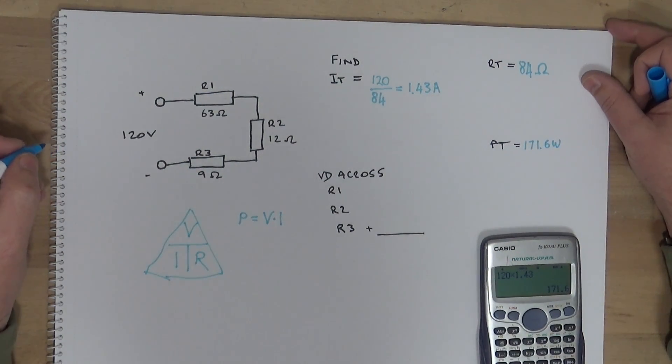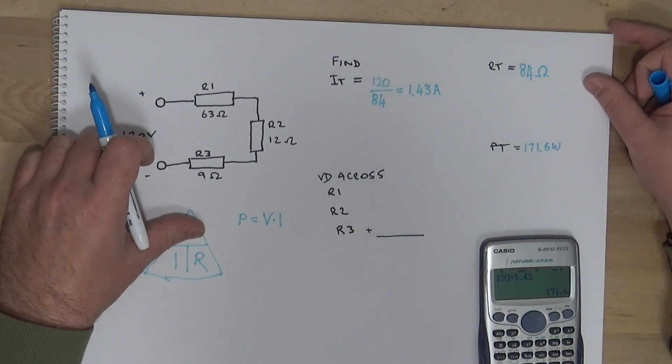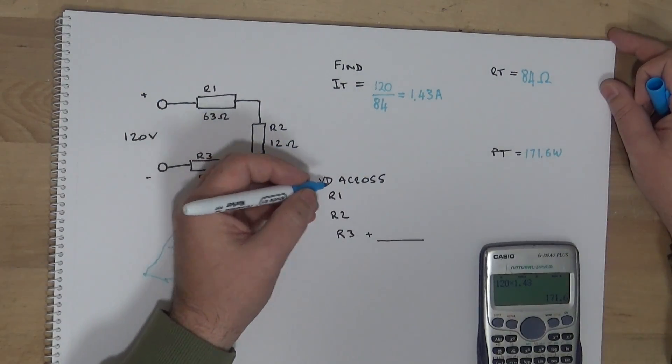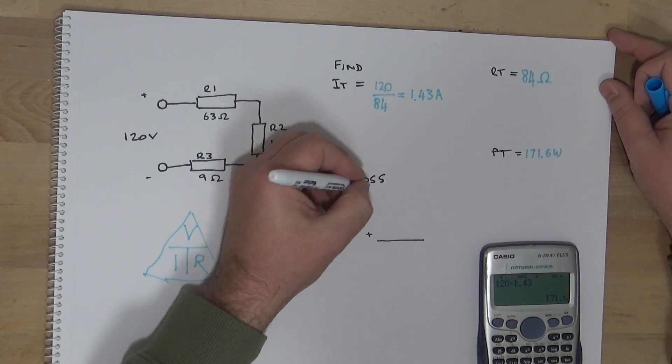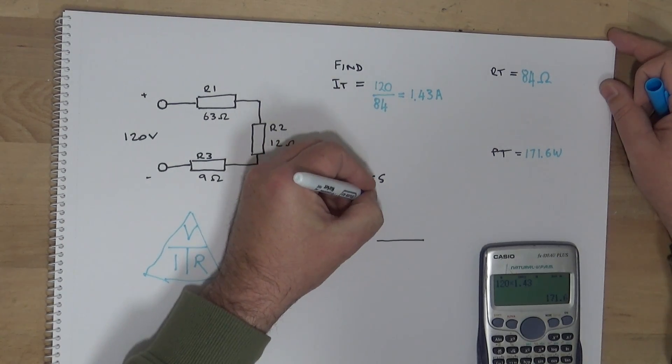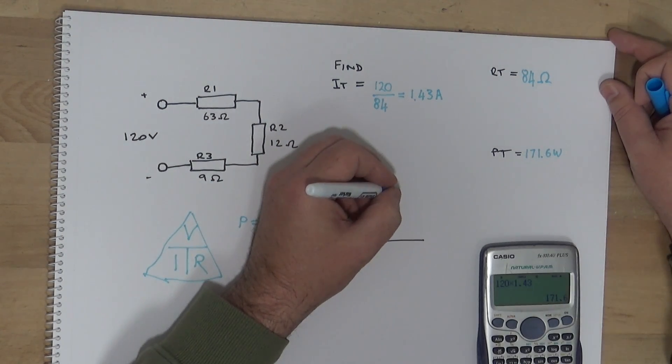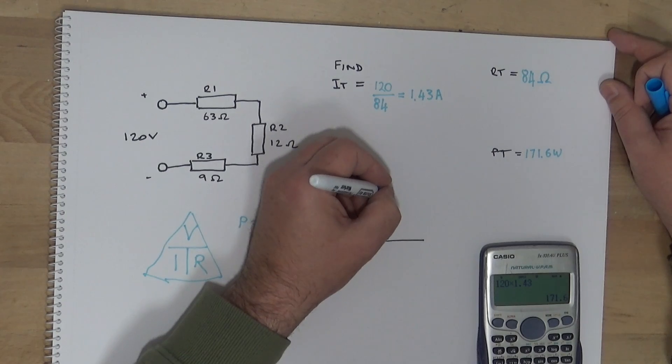Okay, so now we want the voltage drop. The voltage drop is I times R. So R1 is going to equal 1.43 multiplied by 63.